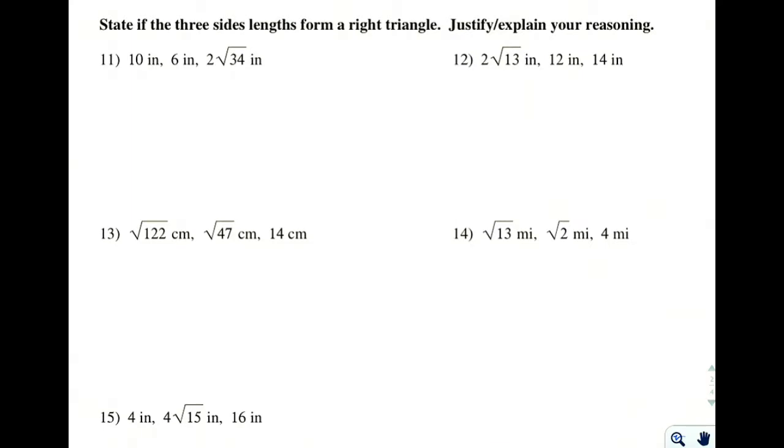So whenever you are asked something like this, you're working backwards from the Pythagorean Theorem. If these sets of numbers meet the a squared plus b squared equals c squared, and they make it true, then it must be a right triangle. In the same way that if we have a right triangle, we can use this because we know it's true. So it's just working in reverse.